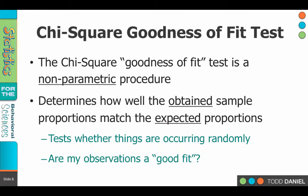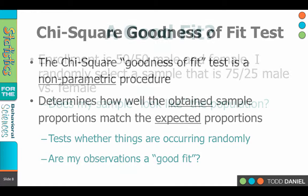The chi-square is a goodness-of-fit test and a nonparametric procedure, and it tells us how well our obtained sample — our observed scores — match the expected proportions. So it tests whether what we see is what we'd expect to see if everything was occurring randomly. Essentially it's asking: are the observations I have a good fit if my assumption of randomness holds?